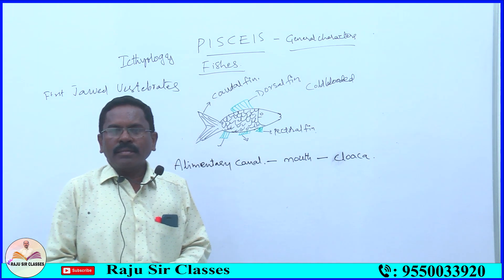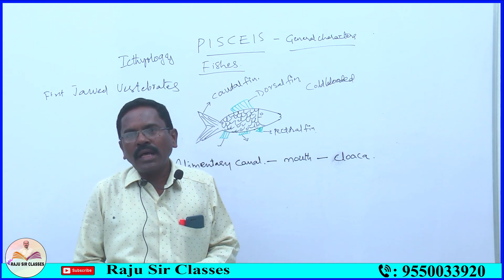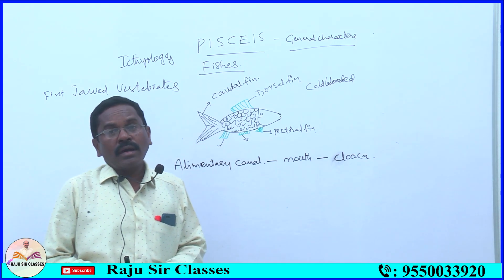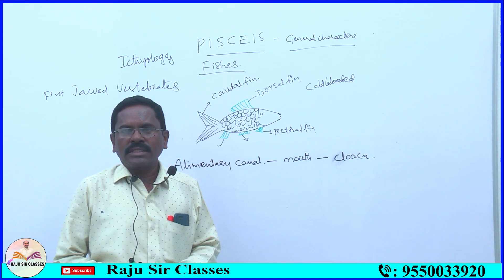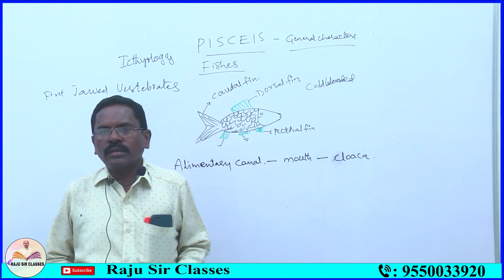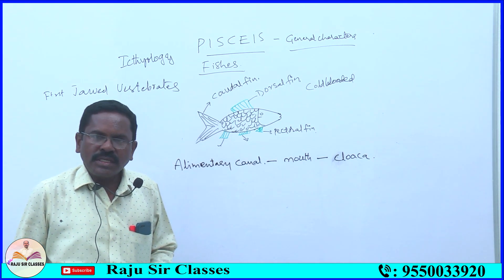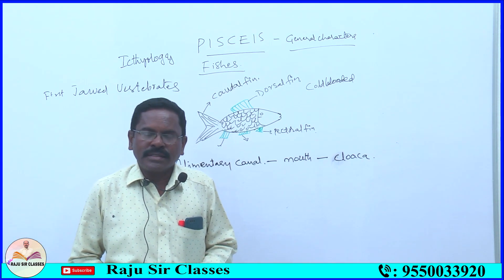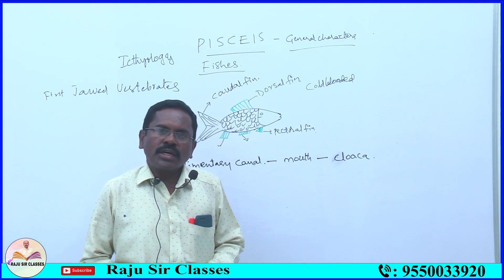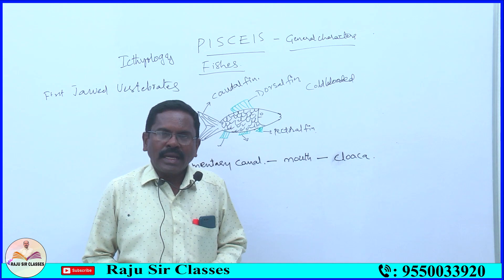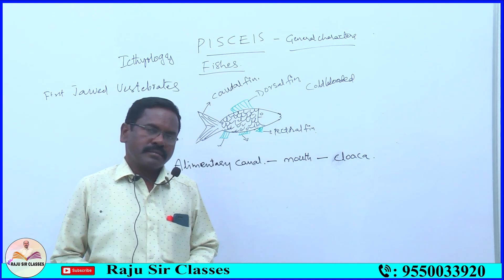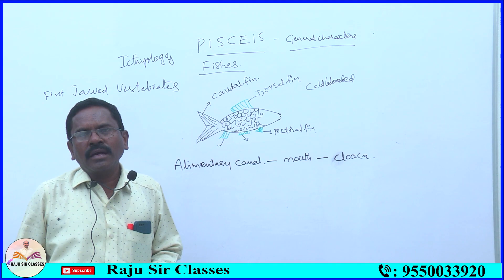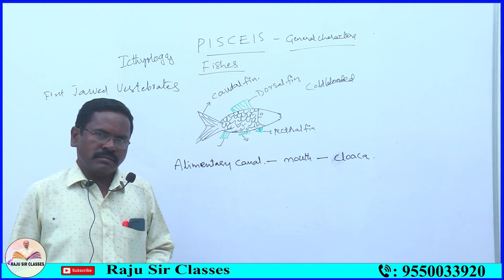This is also a common character applicable to all vertebrates except mammals — from fishes to aves, including amphibians and reptiles. The alimentary canal starts with mouth and ends with cloaca. Only in mammals does the alimentary canal end with the anus.